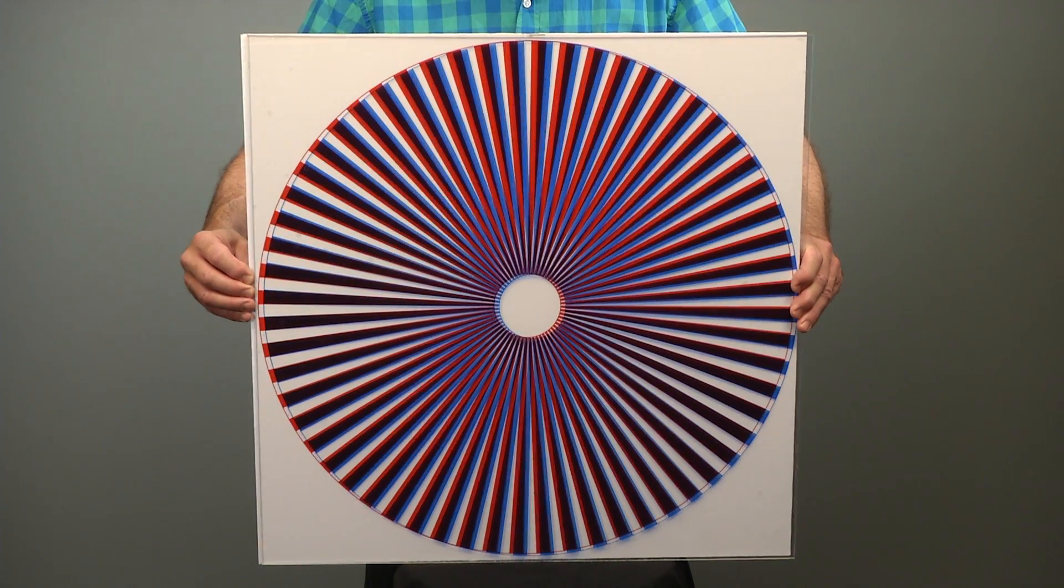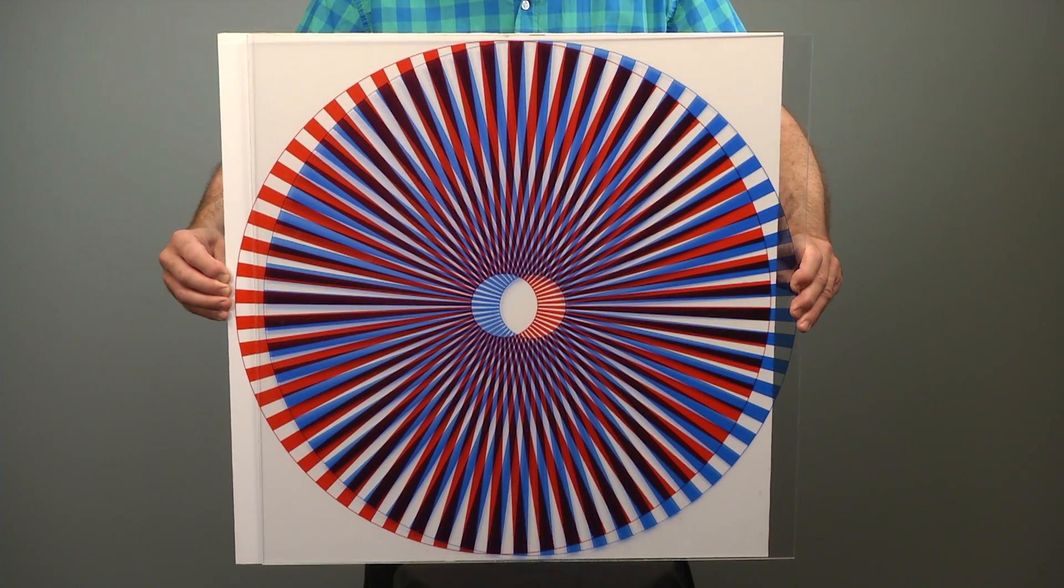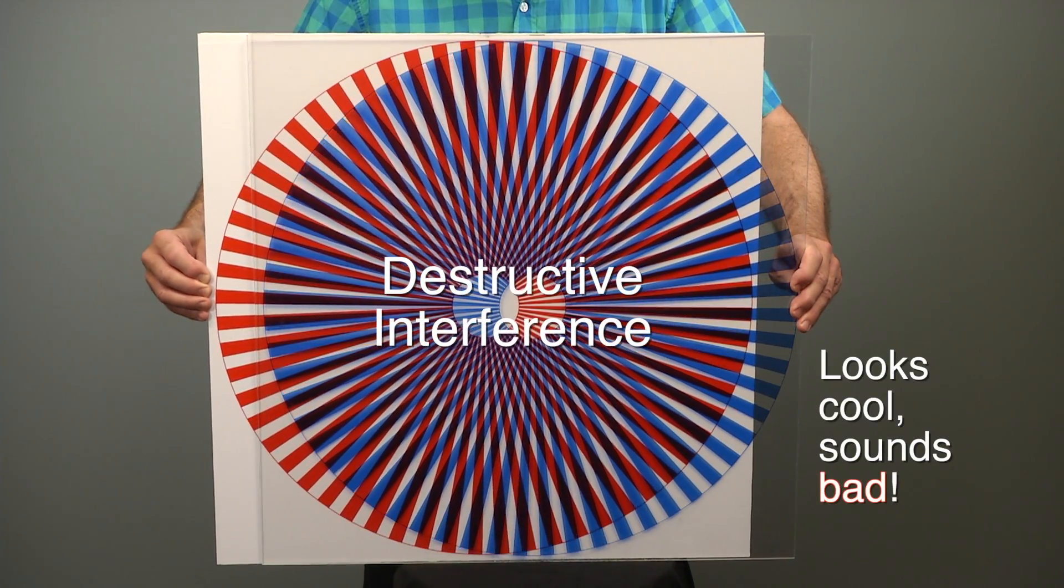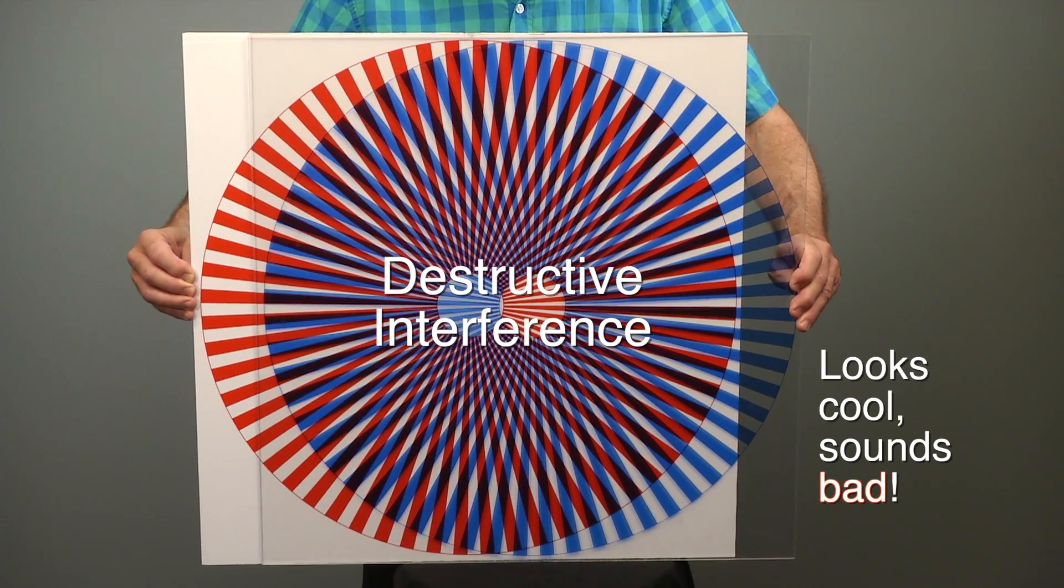but when I move the red one backwards, like a delayed sound reflection, it creates destructive interference patterns, which changes the original sound wave.